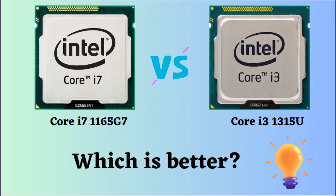In this video, I will compare the Intel Core i7-1165G7 and Intel Core i3-1315U, highlighting their differences, and then provide a conclusion to help you determine which one is the better choice. Both are low-power CPUs designed for thin and light laptops, and they have their own strengths as well as weaknesses. So let's look at them.